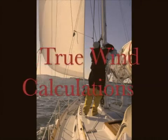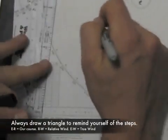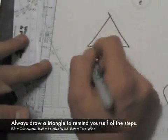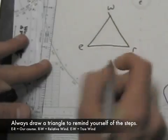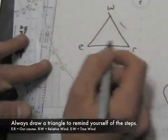This is a training video for true wind calculations by hand. It's actually a pretty easy calculation. First thing to do on the mow board is always draw a little triangle and label the sides so you can remember how to do the problem if you ever get stuck.